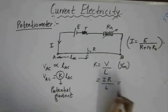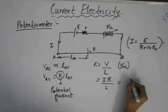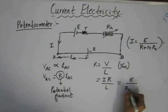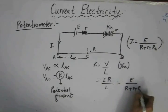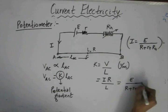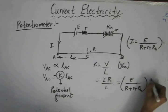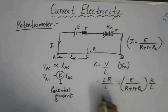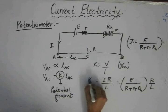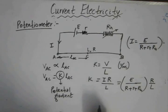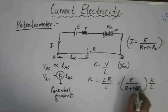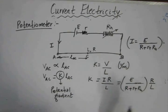The total resistance of the circuit is R plus small r plus R_H. So the current passing through the circuit is E divided by (R + r + R_H), and substituting this in place of i gives the expression for the potential gradient as E divided by (R + r + R_H), times R by L.